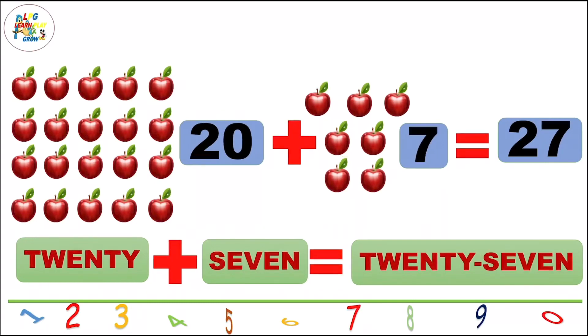26. Now, 20 plus 7 is 27. Learn the spelling of 27: T-W-E-N-T-Y, twenty, S-E-V-E-N, seven. 27. T-W-E-N-T-Y, twenty, S-E-V-E-N, seven. 27.